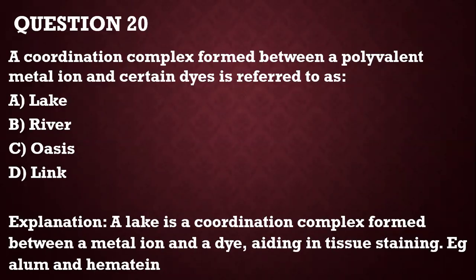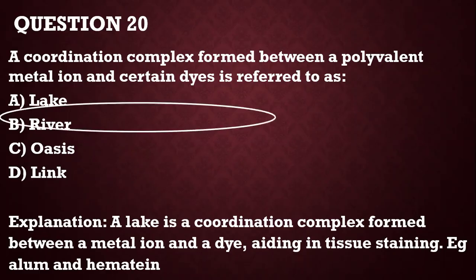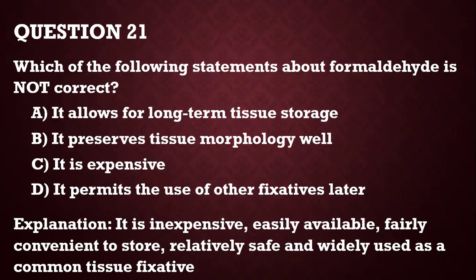Question 20: a coordination complex formed between a polyvalent metal ion and certain dyes is referred to as a lake. That's the correct answer — a lake is a coordination complex formed between a metal ion and a dye, which in tissue staining includes your alum and your hematine. Question 21: which of the following statements about formaldehyde is not correct? It allows for long-term tissue storage, it preserves tissue morphology well, it is expensive, and it permits the use of other fixatives. The answer is 'it is expensive' — it's not expensive, it's inexpensive, easily available, fairly convenient to use, and relatively safe. That is why it is widely used as a common tissue fixative.